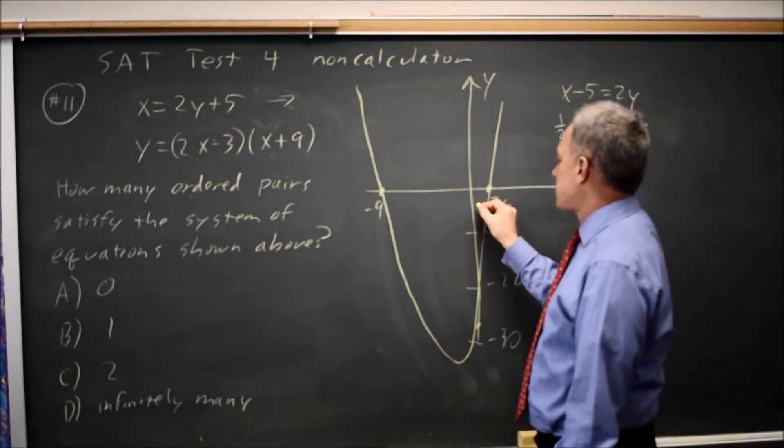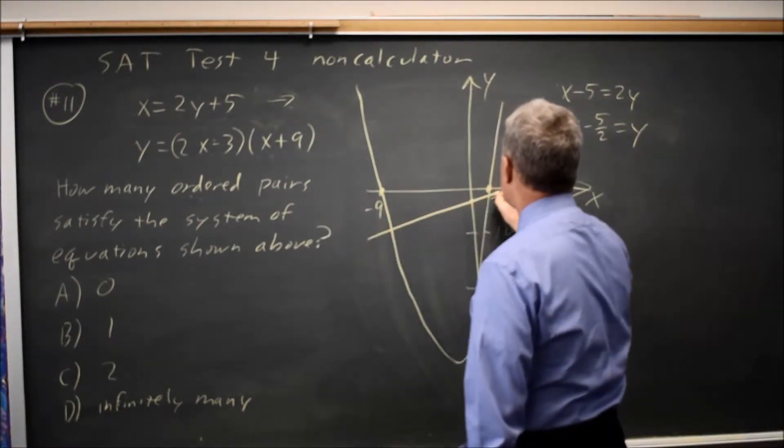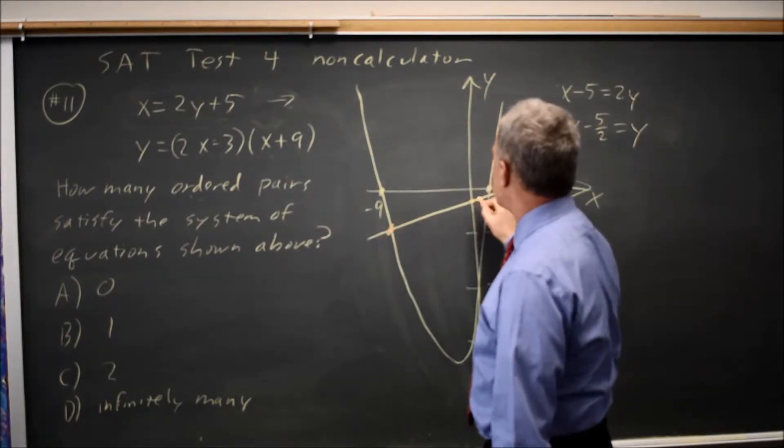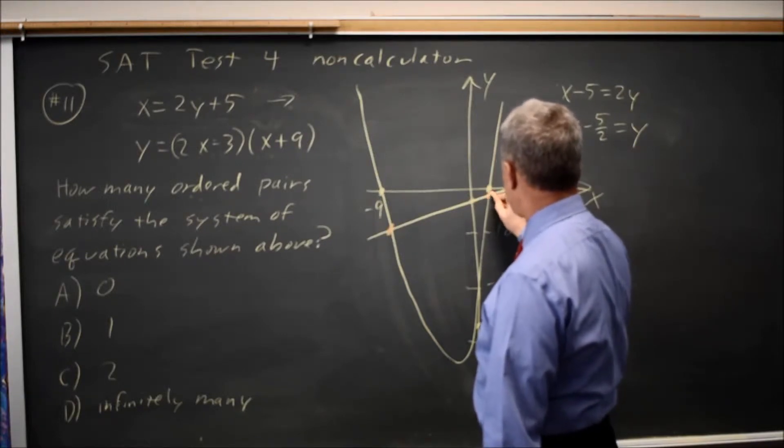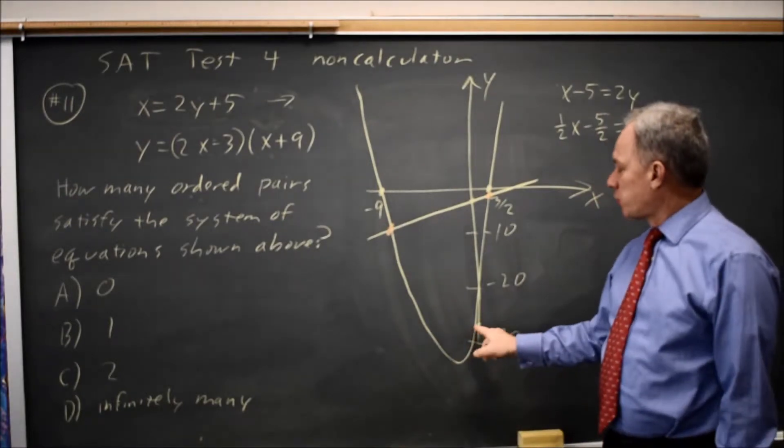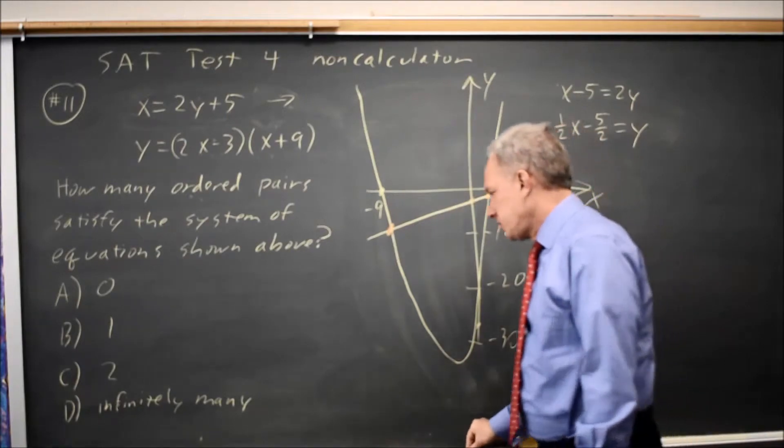This is a line passing through the x-axis roughly here with a shallow positive slope. So I must have two points of intersection, here and here, if my parabola opens up and passes through the y-axis below the line. So the correct answer would be 2.